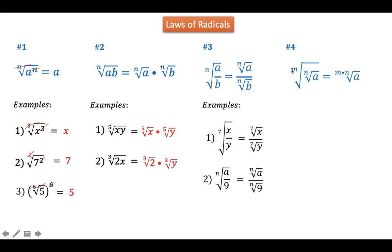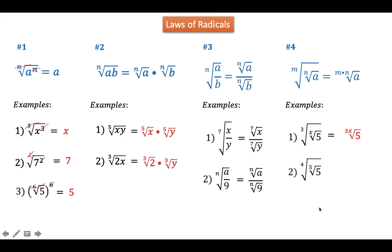For the Law of Radicals #4, the nth root of the mth root of a is equal to the (m times n)th root of a. If you see two nested indices, simply multiply them and the expression is in its simplified form. For example, the cube root of the xth root of 5 simplifies to the 3x root of 5 — just multiply 3 times x. For the last example, the 4th root of the 5th root of 5 becomes the 4 times 5, or 20th root of 5. That's how easy it is.